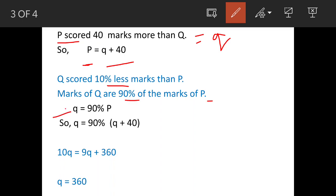We can say Q is equal to 90 percent P. Now, this is P, so we substitute this value here. We get Q is equal to 90 percent in bracket Q plus 40.